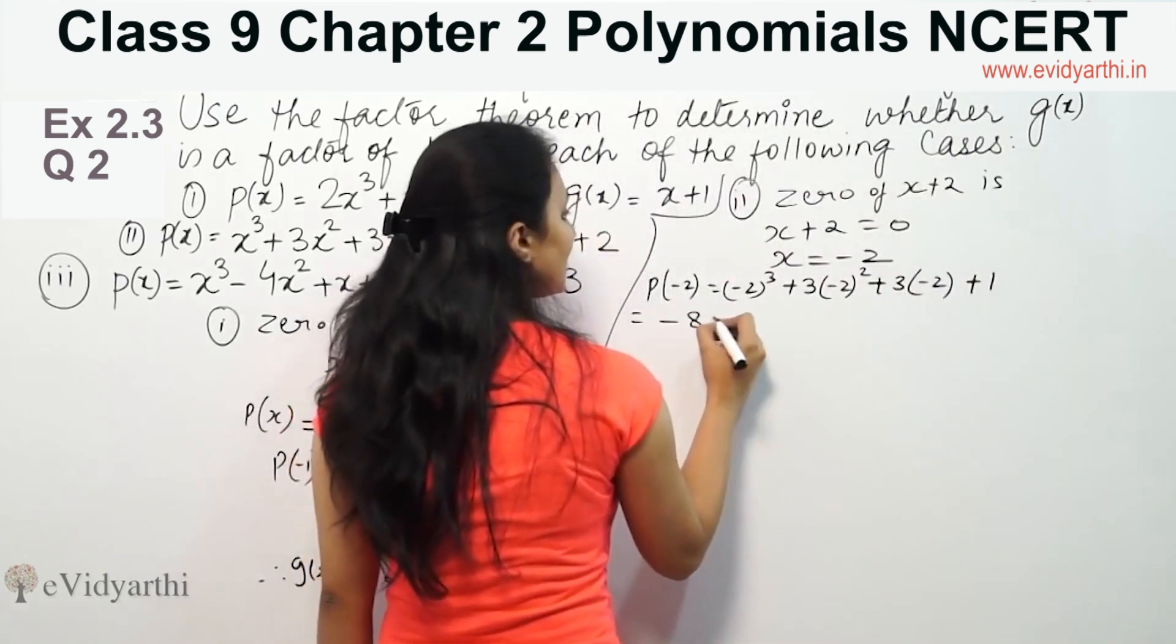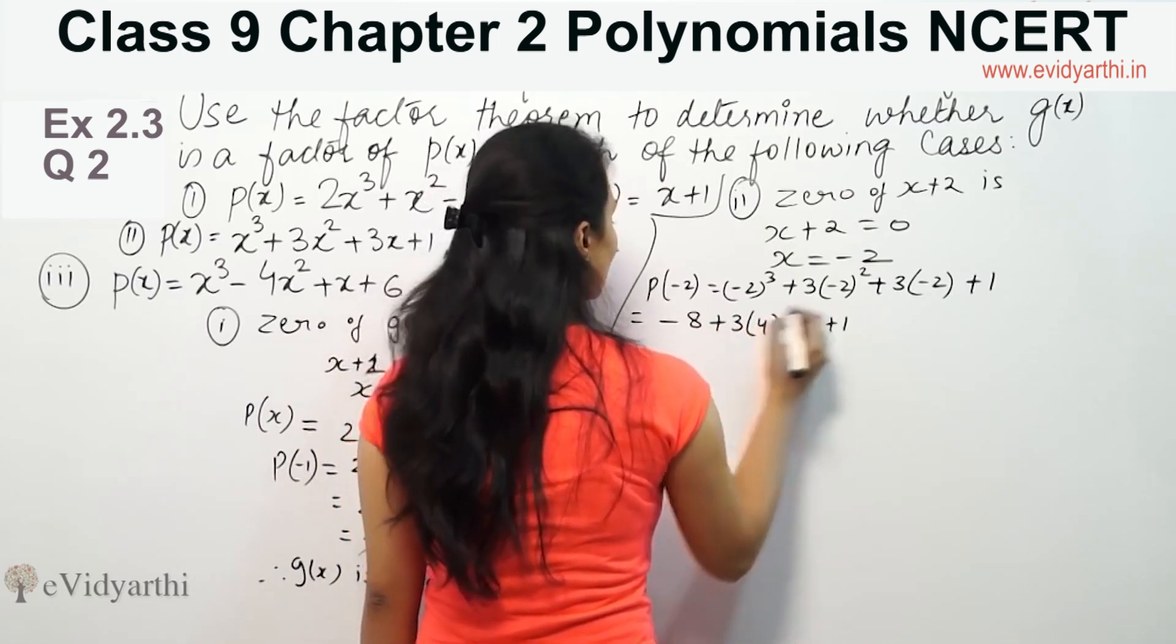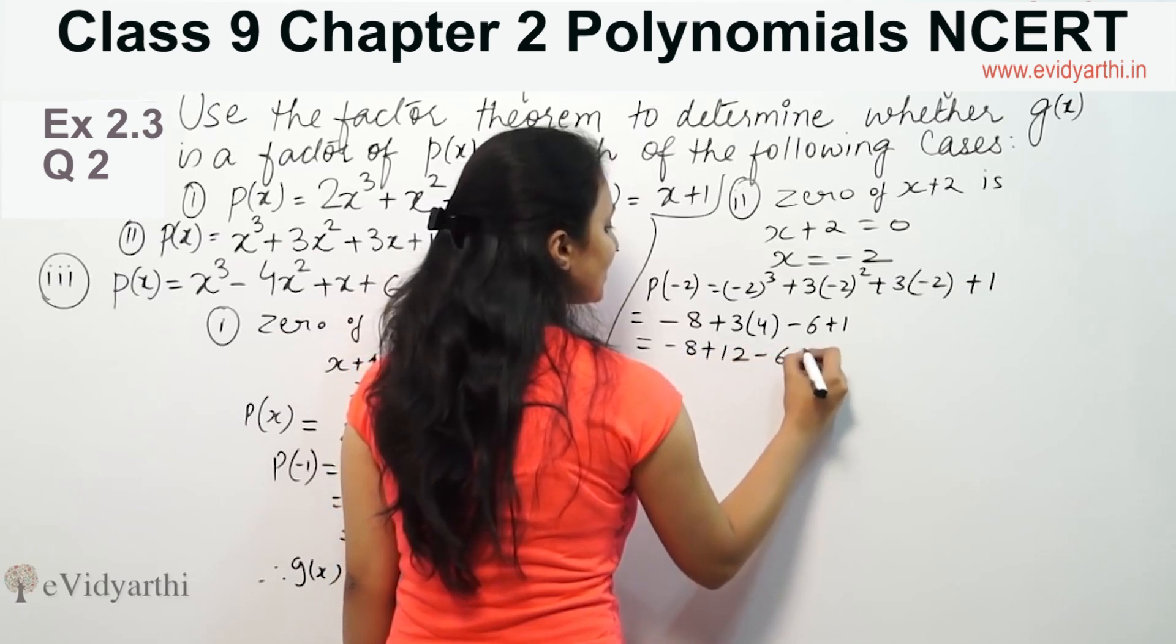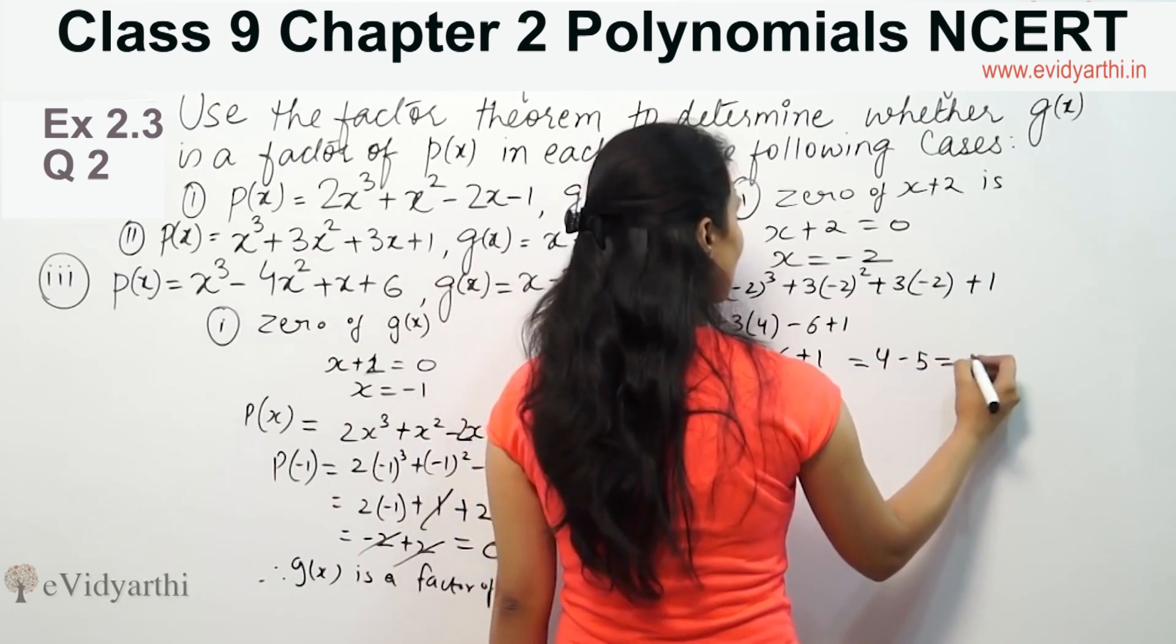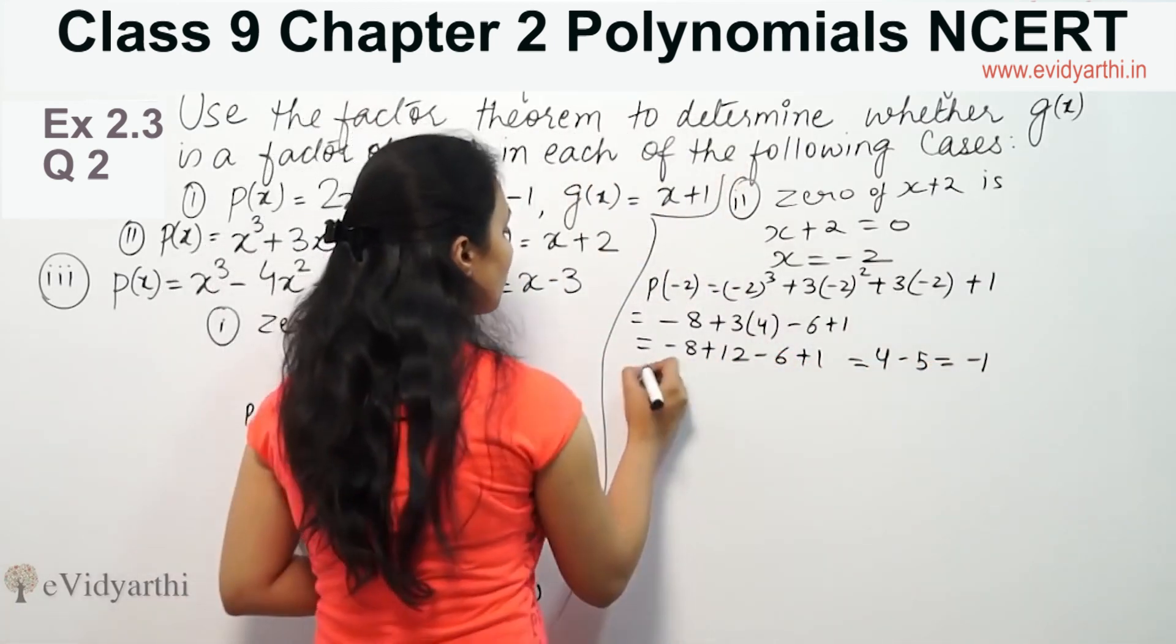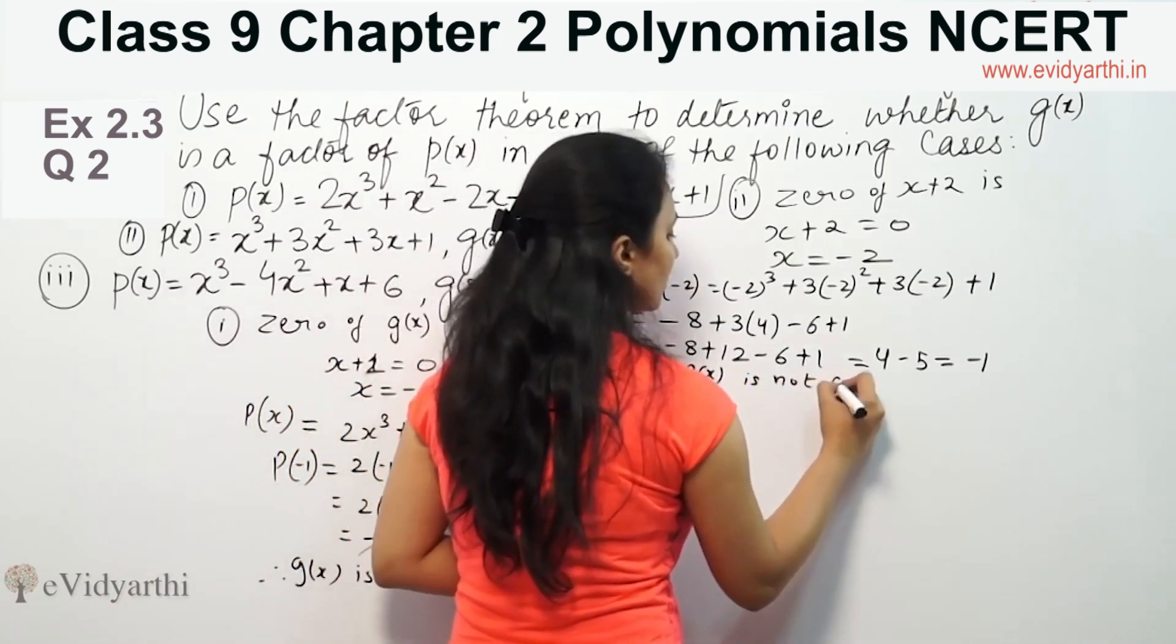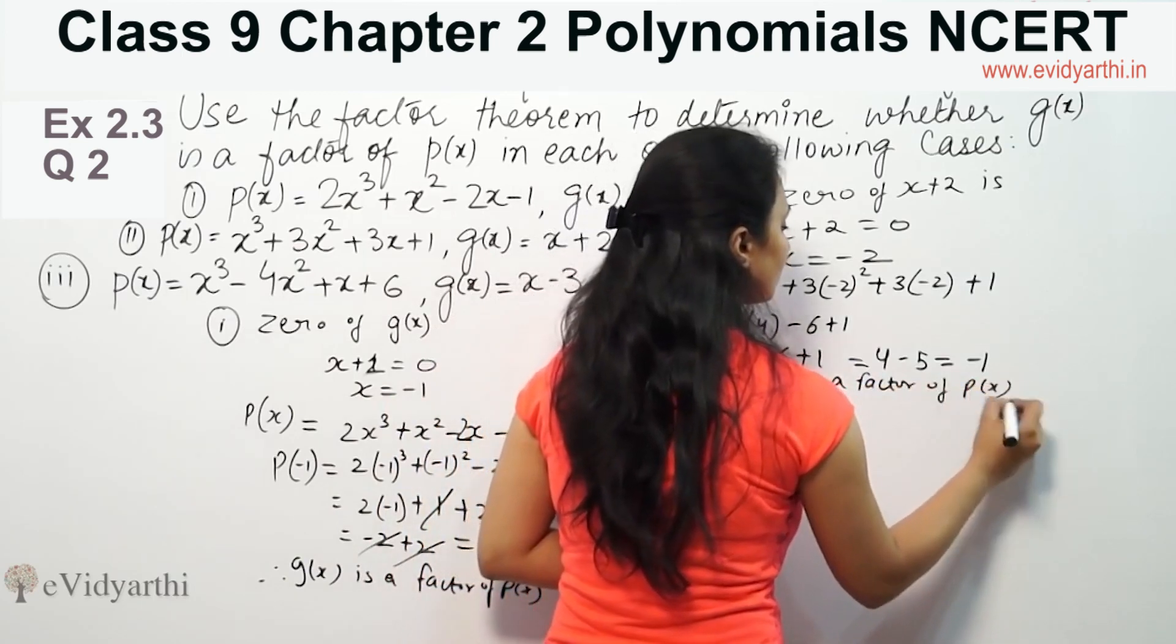So we get minus 8 plus 3 times 4 minus 6 plus 1. That means minus 8 plus 12 minus 6 plus 1, which equals minus 8 plus 12 is 4 minus 5 equals minus 1. So the answer is not zero. Therefore, g(x) is not a factor of p(x).